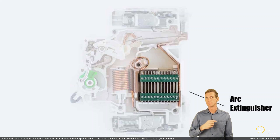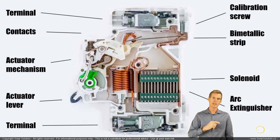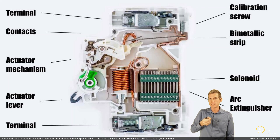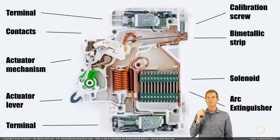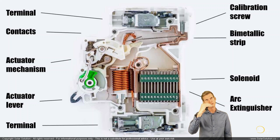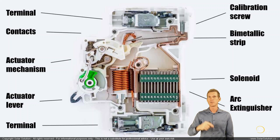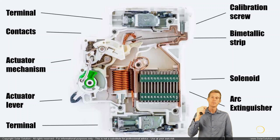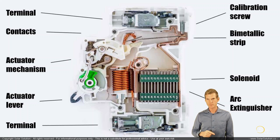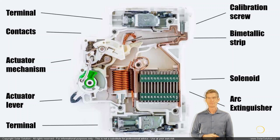So we have a good idea of what's inside the breaker: the terminals for connection, the actuator lever with its mechanism for flipping, the contacts for making or breaking the circuit, the bimetallic strip that bends for the slow tripping current, the calibration screw for fine-tuning, the arc extinguishing chamber, and the solenoid responsible for the instantaneous tripping current.